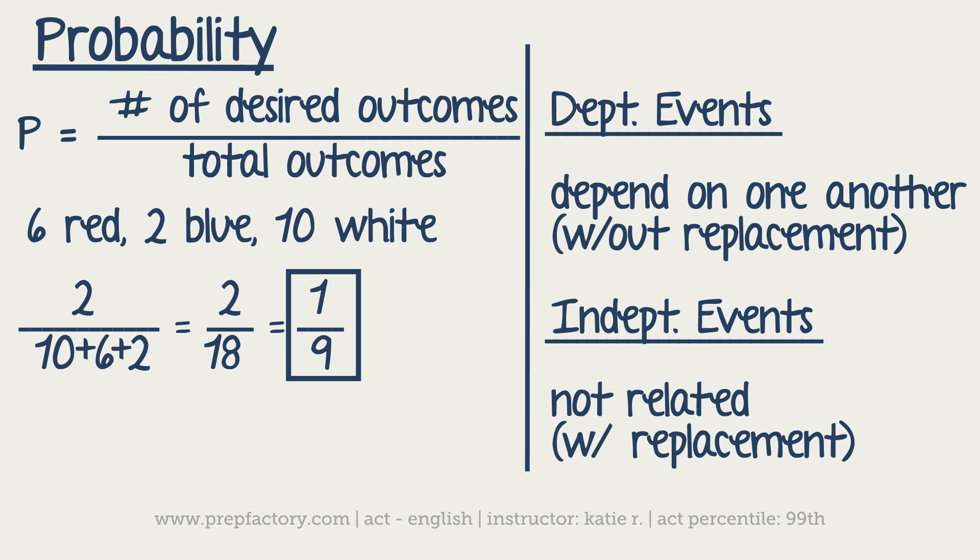And then the next type is independent events. So they're completely not related. So with replacement will be a good indicator of that. So if I took out a blue marble, put it back, and then I took out a white marble, it's as if I didn't take out a blue marble in the beginning anyway because I already replaced it.